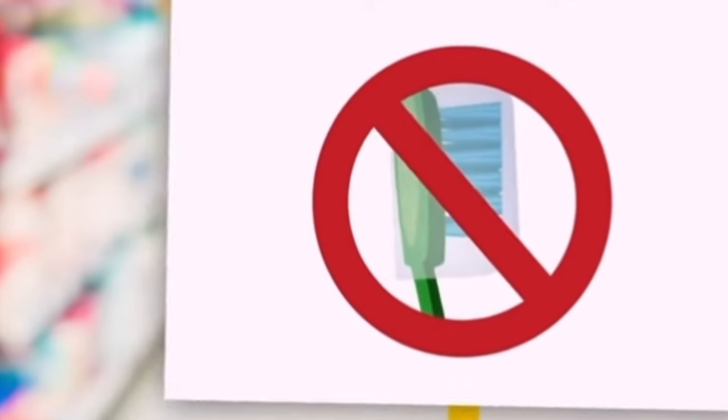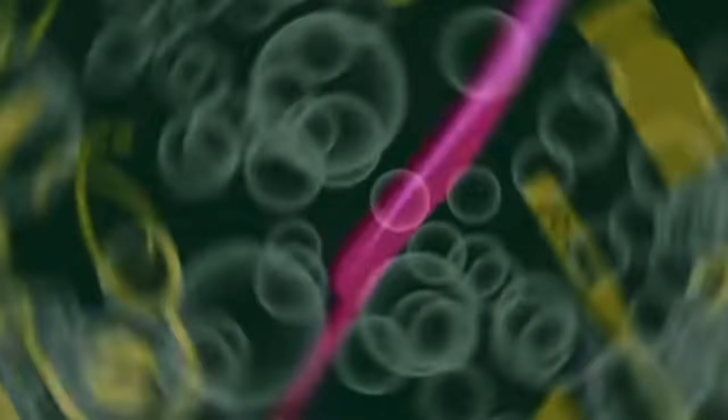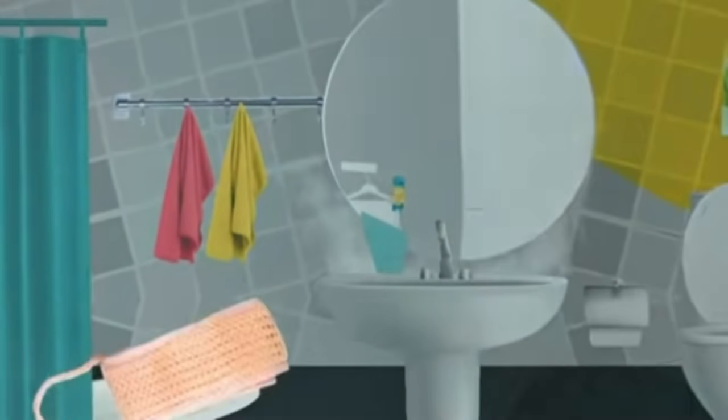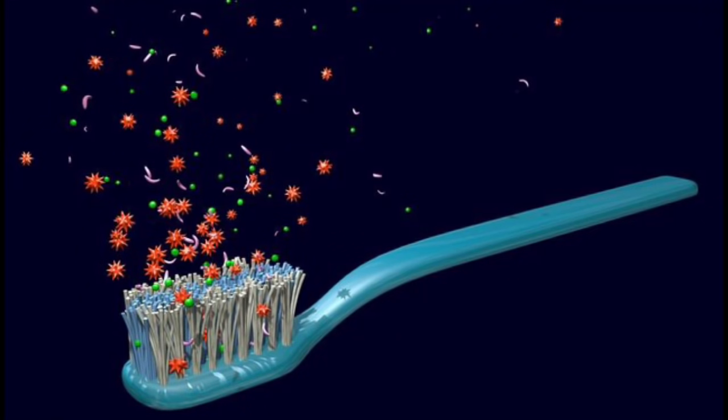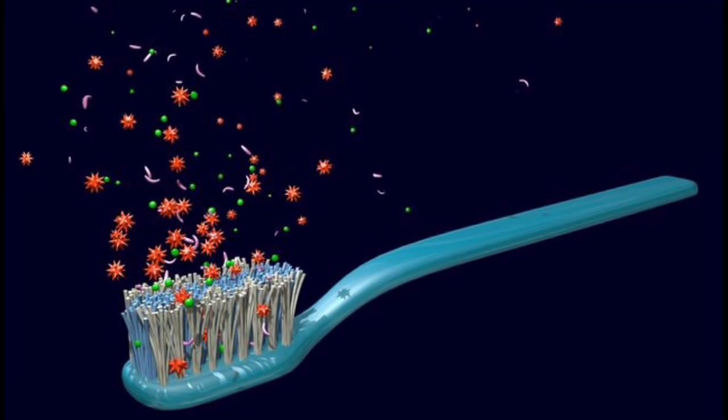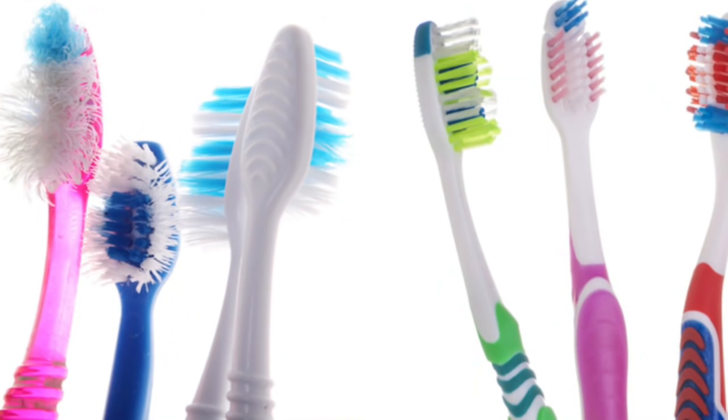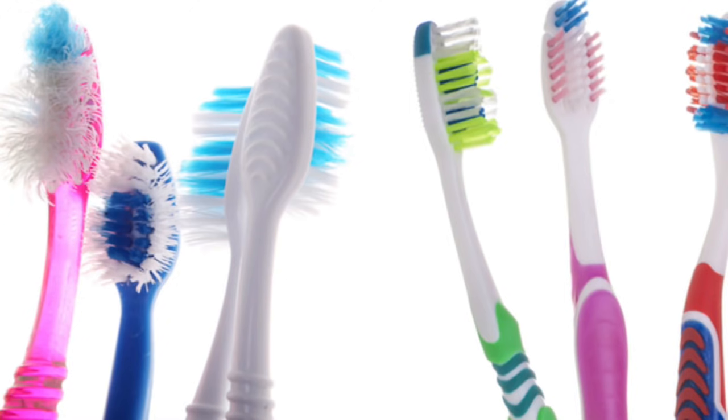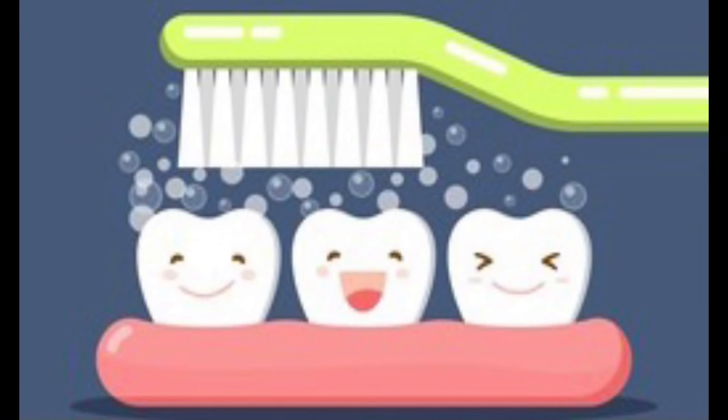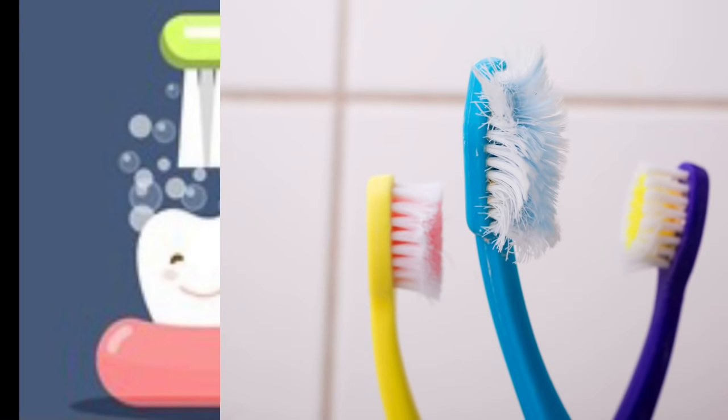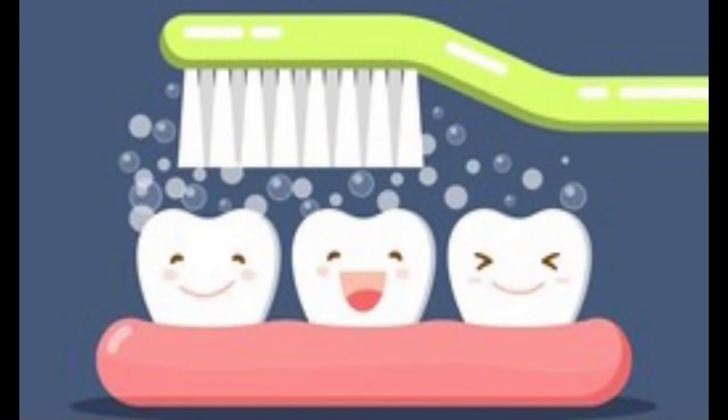So it is really important to change our toothbrush every three months. One of the reasons we should throw our toothbrush away every three months is that the bristles will strip the cleaning ability and fall out or change shape. Once the bristles become splayed, they won't maintain the performance, and frayed bristles don't reach spots between our teeth and along the gum line effectively.